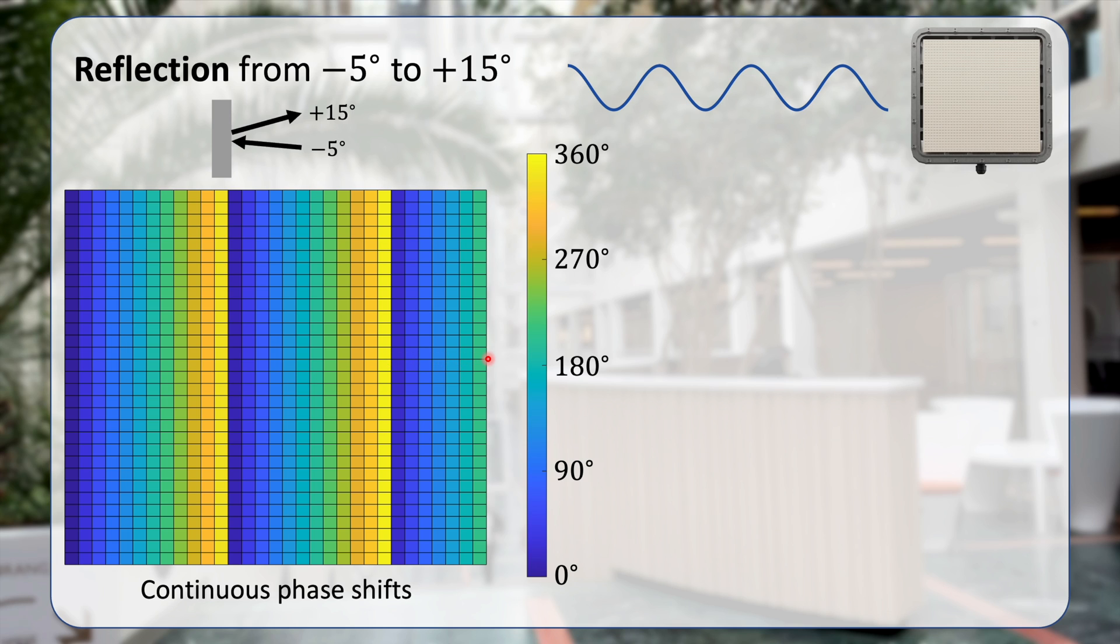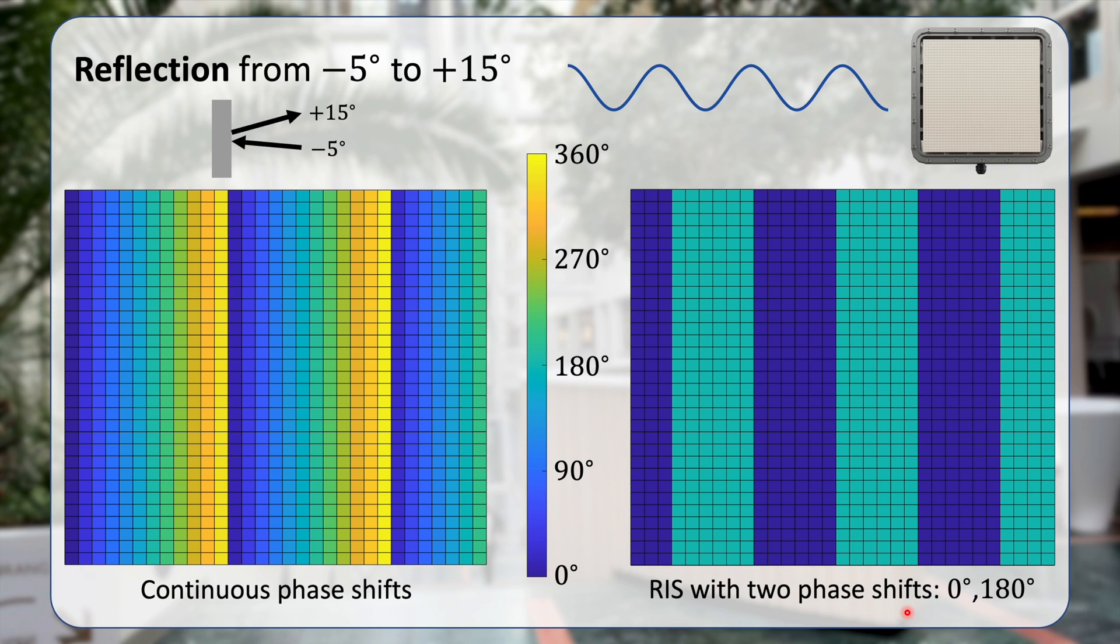However, the RIS that we are using cannot use just any values between 0 and 360 degrees. It can only have two different phase shift values of 0 and 180 degrees. Therefore, we need to take all these values here and just quantize it into different segments. Things that are close to 0, things that are close to 180, close to 0, and so on.